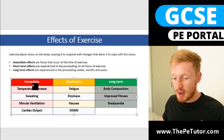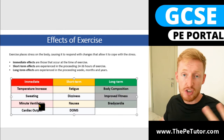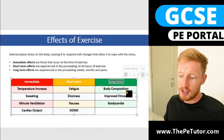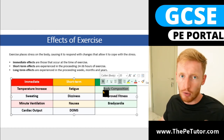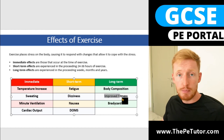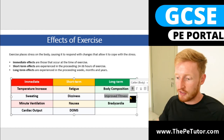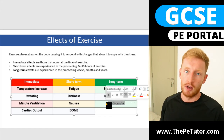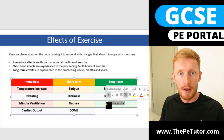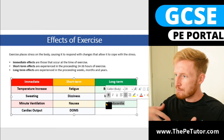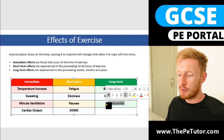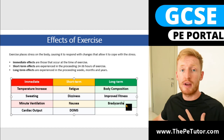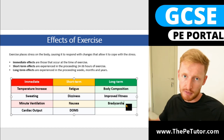The immediate ones include temperature increase, sweating, minute ventilation, and cardiac output increase. Then the longer term adaptations include body composition changes with muscle or fat mass, improved cardiovascular, muscular and skeletal fitness, or cardiac hypertrophy where the cardiac muscle gets stronger, bigger and thicker with more contractile strength — and that might lead to resting heart rate dropping below 60 to 50 beats per minute.